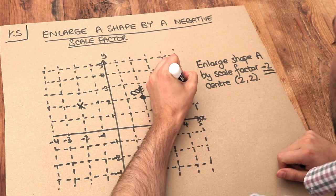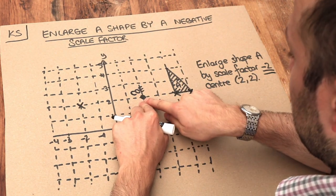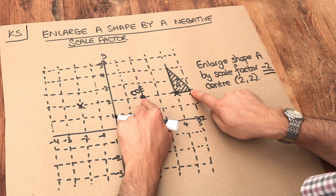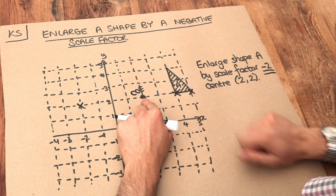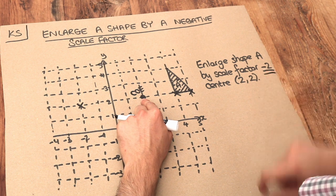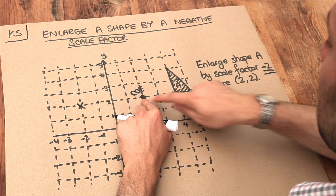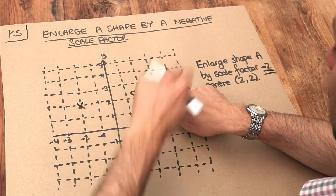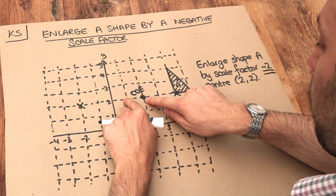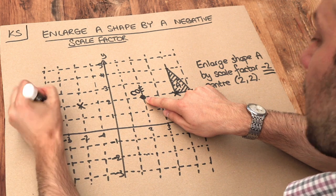Let's take this point. Starting from the centre of enlargement, 1, 2, 3 squares to the right. 3 multiplied by negative 2 is negative 6. So we end up going 6 in the opposite direction left. So 1, 2, 3, 4, 5, 6, we end up here.